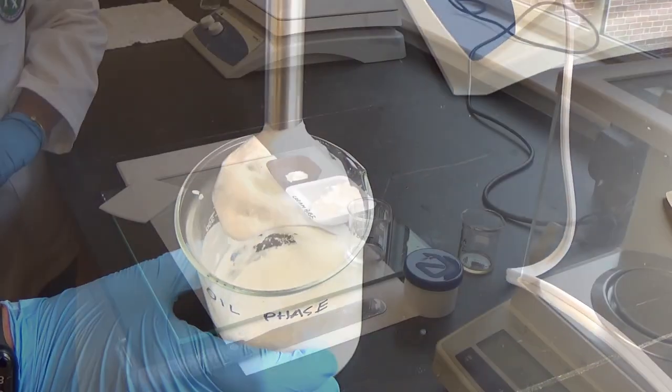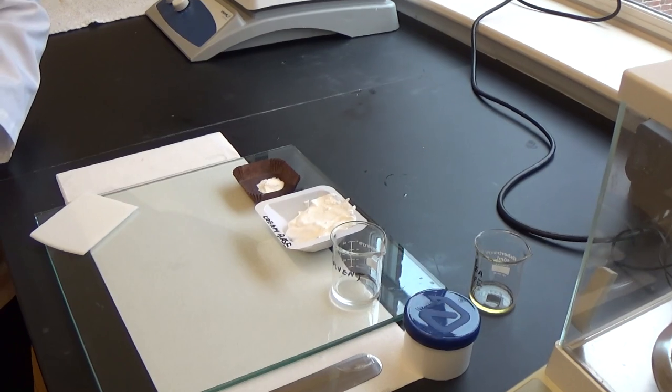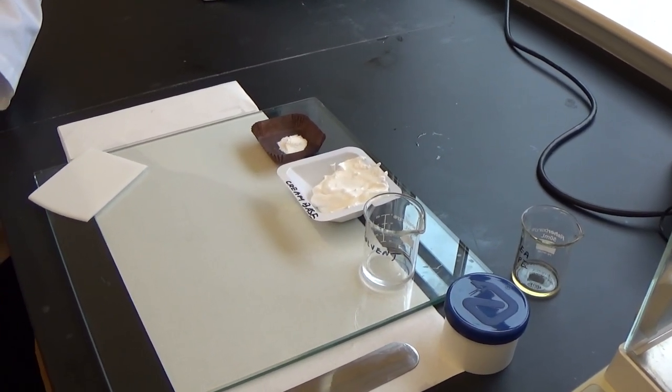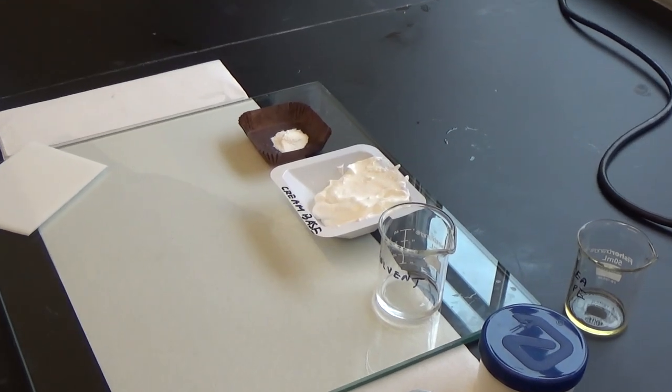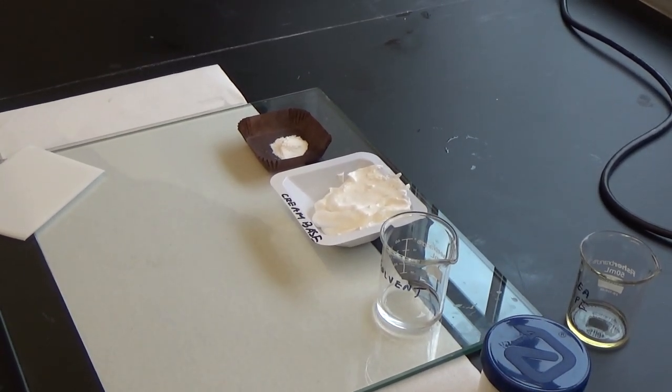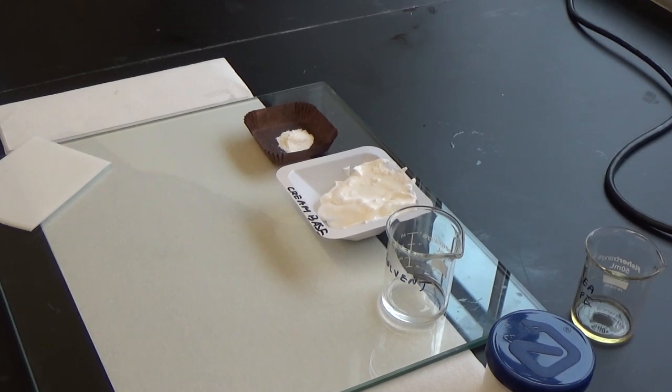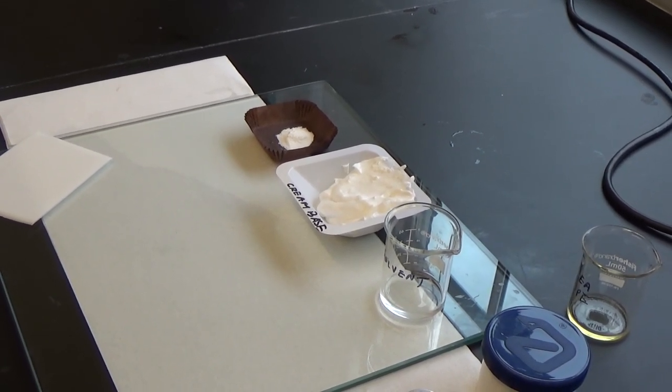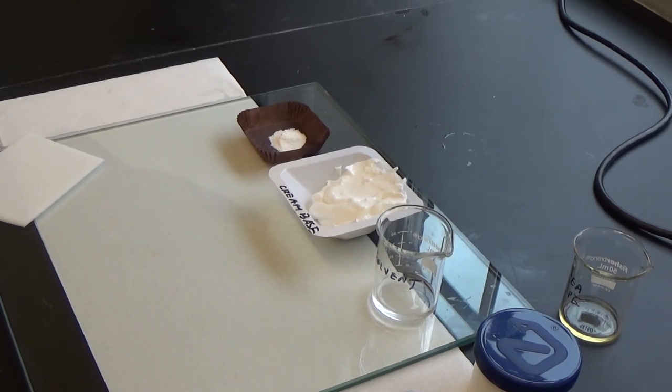Now that the cream base is ready, we will incorporate the drug into the cream base to compound the preparation. But if you want it, this drug can also be added into the phase in which it is soluble at the beginning of the compounding process. In this case, we are actually adding the drug into the cream base. This is also called the direct incorporation method.